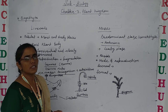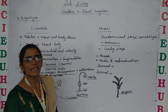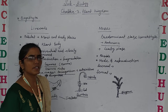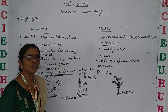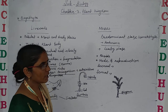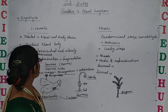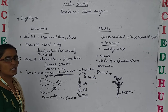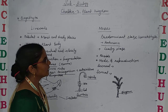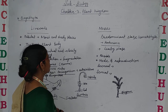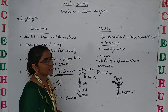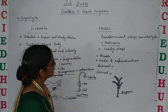Before that we discussed about the algae — four classes of algae — as well as we discussed the common features of Bryophyta. Now let's discuss. Bryophyta are divided into two parts: liverworts and mosses. So today let's discuss about their features.